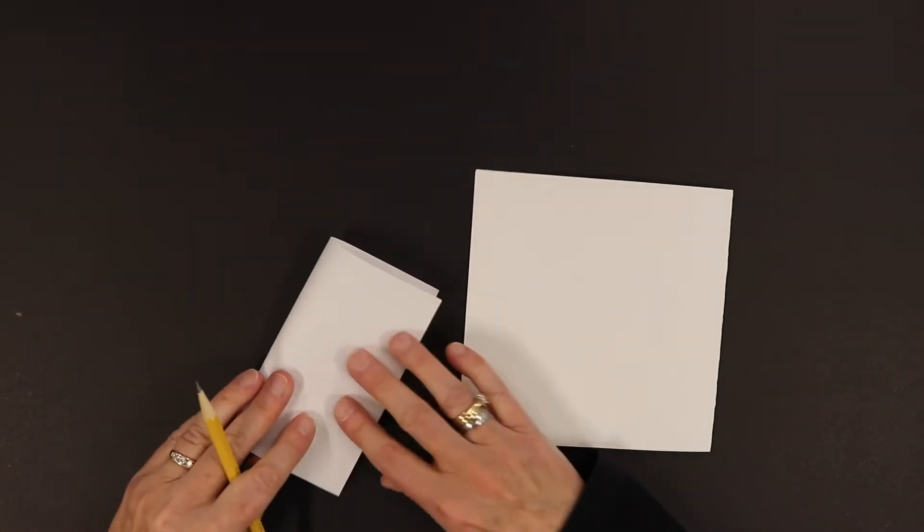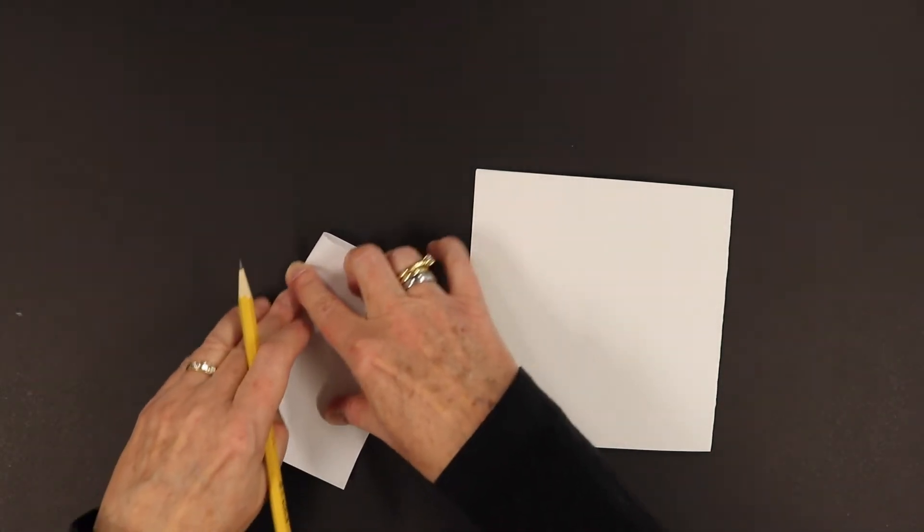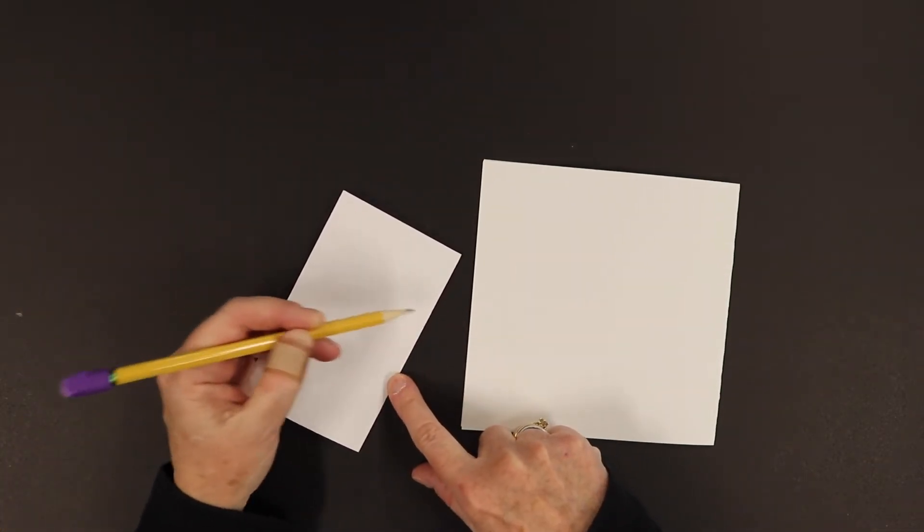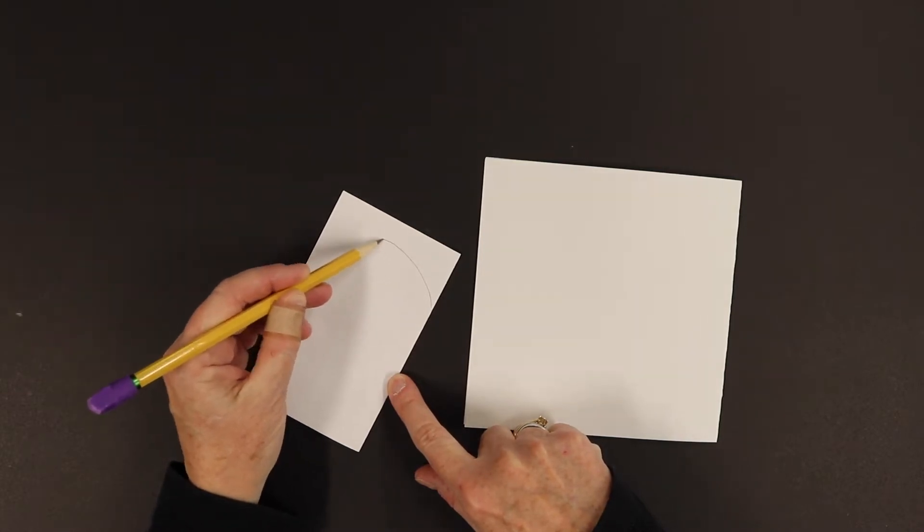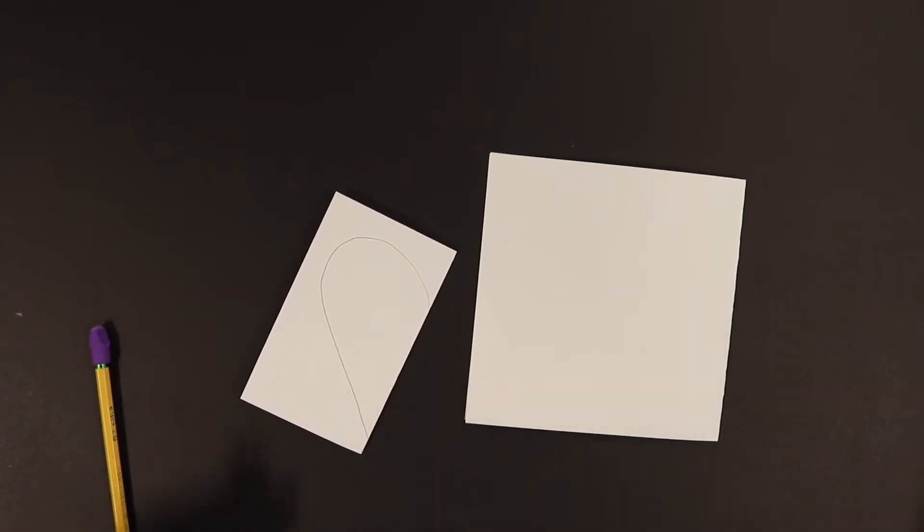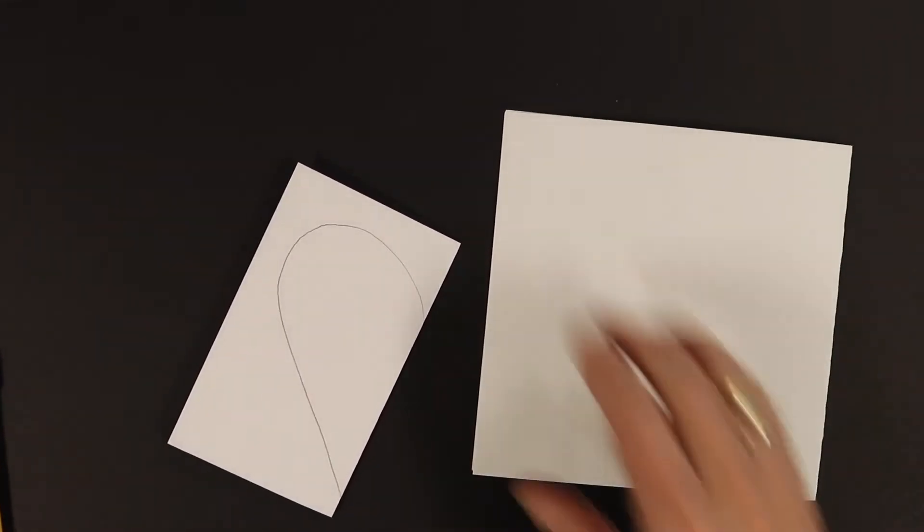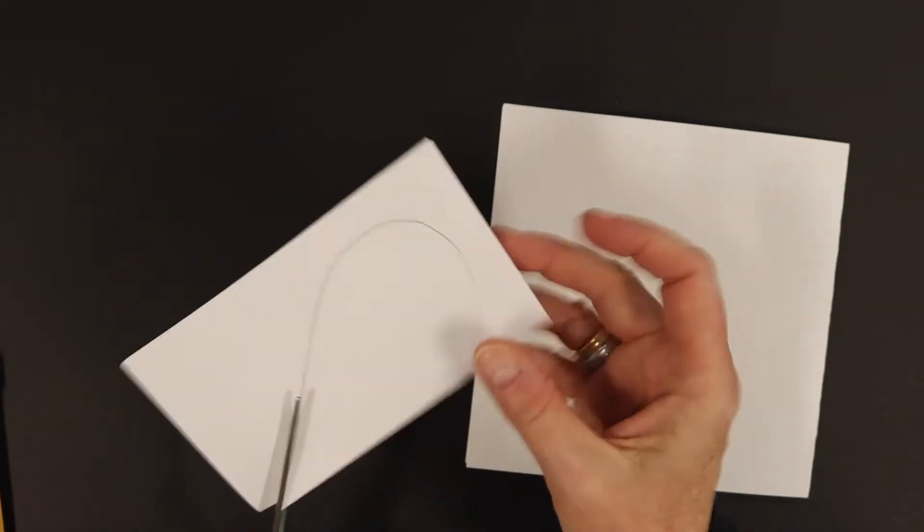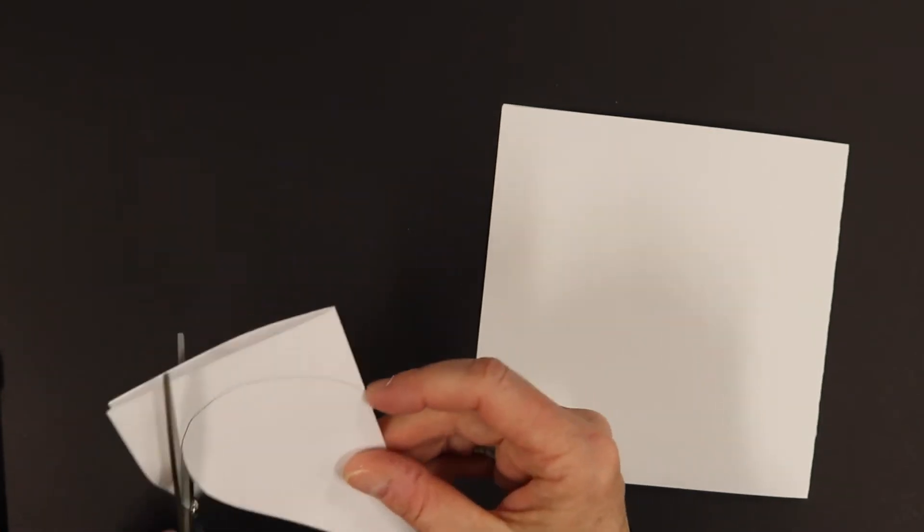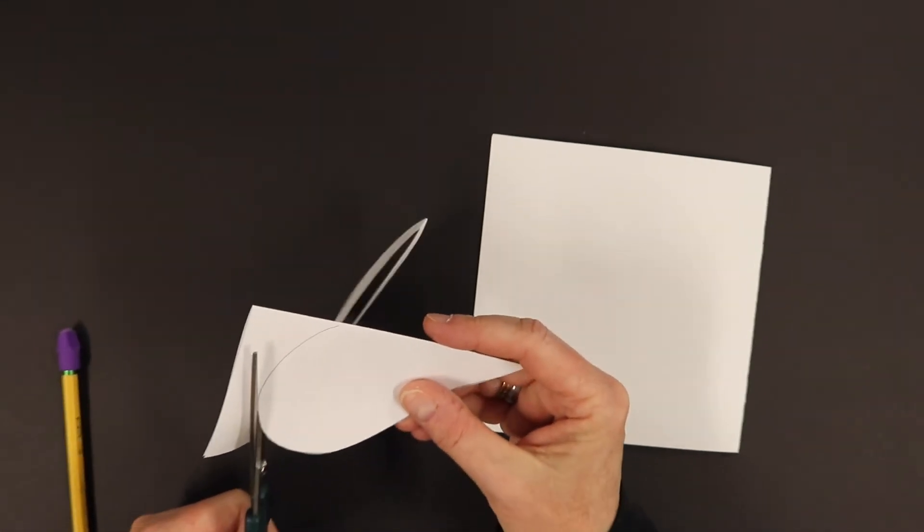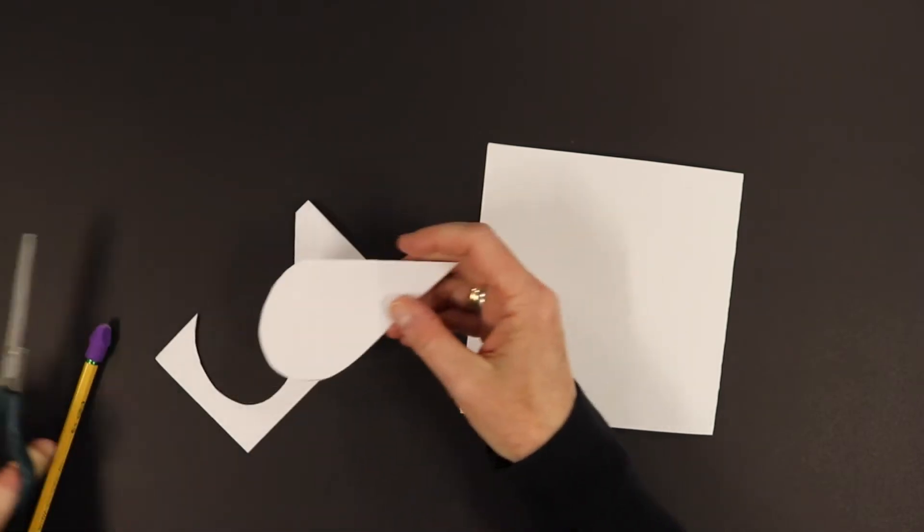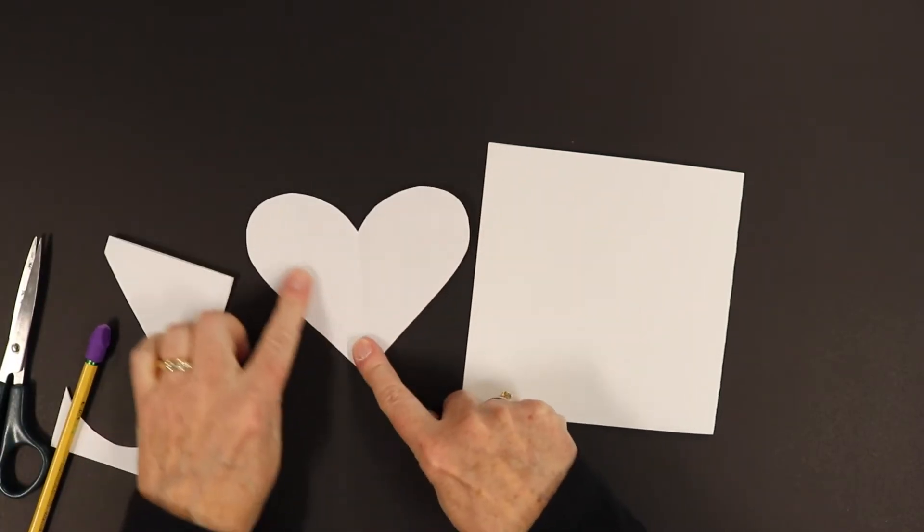You take your piece of paper, you fold it in half, and right where the fold is, you start and you draw half of a heart. So you come up and back down for the point, and then you take your scissors, and you start at the fold, and you just cut through both pieces of paper, and when you open it up, you have a really nice shaped heart.